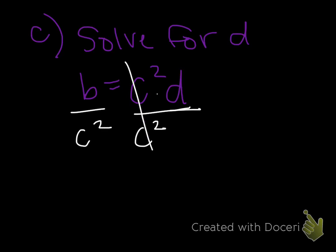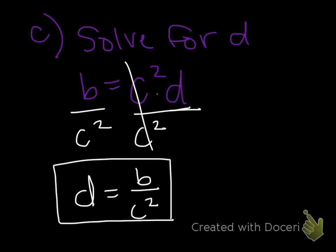On the right-hand side, they are canceling, leaving d by itself. So d equals b over c squared. Notice for literal equations, you don't get a numerical answer. You get an answer with all variables in it, just manipulated.